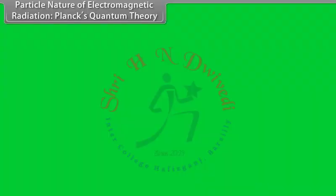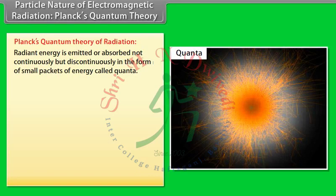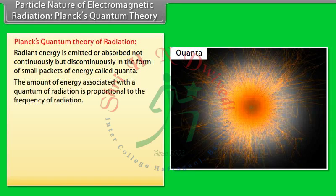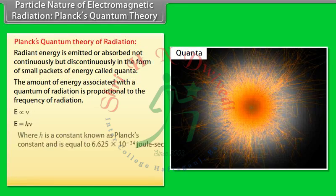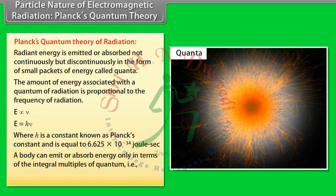Planck's quantum theory: Radiant energy is emitted or absorbed not continuously but discontinuously in the form of small packets of energy called quanta. The amount of energy associated with a quantum is proportional to the frequency of radiation: E = h·nu, where h is Planck's constant = 6.625 × 10⁻³⁴ joule·second. A body can emit or absorb energy only in integral multiples of a quantum: E = n·h·nu, where n = 1, 2, 3, 4, etc.